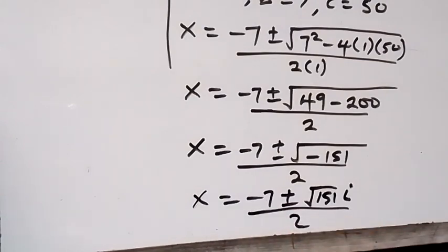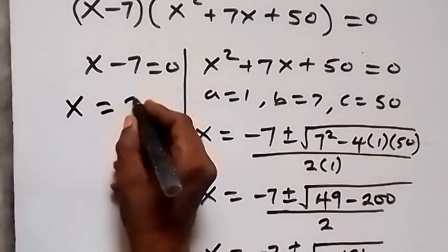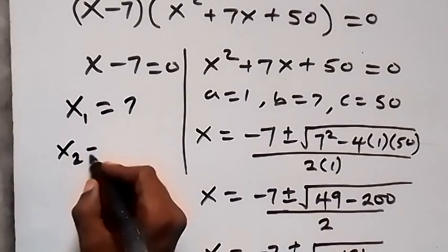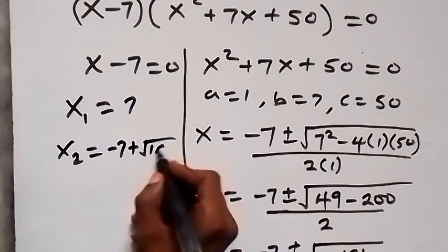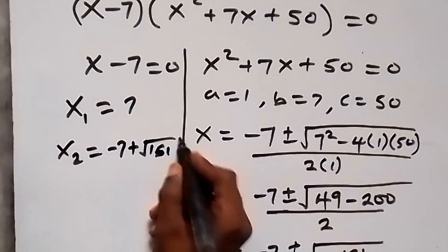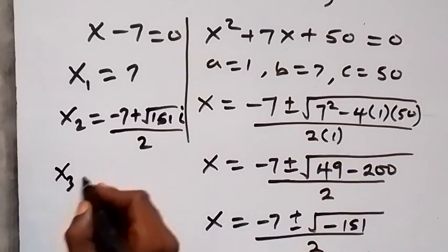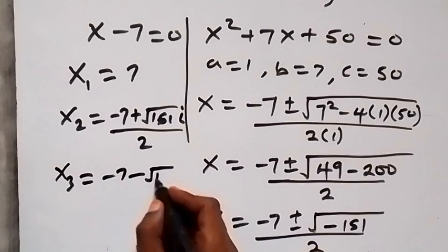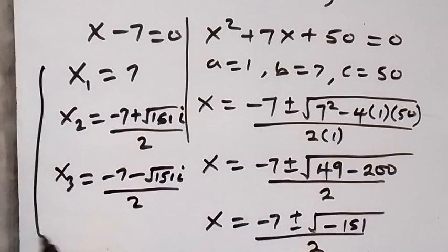So we have three solutions to this problem. x₁ equals 7, x₂ equals (minus 7 plus root 151·i) over 2, and x₃ equals (minus 7 minus root 151·i) over 2. These are the three values of x in this problem. Thank you for watching.